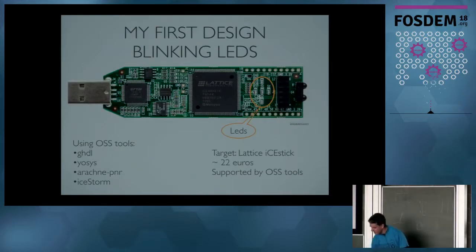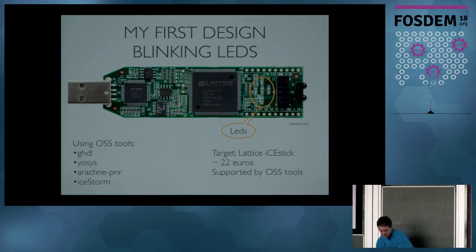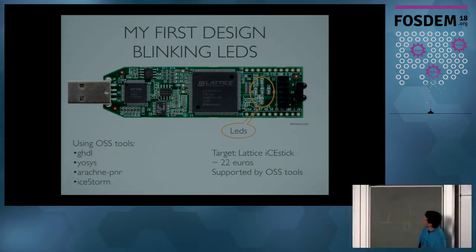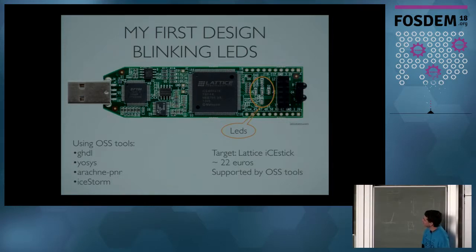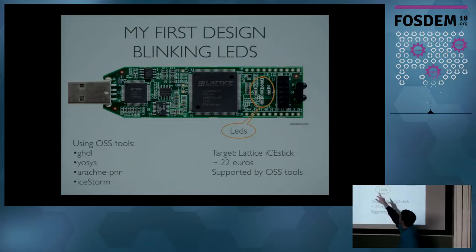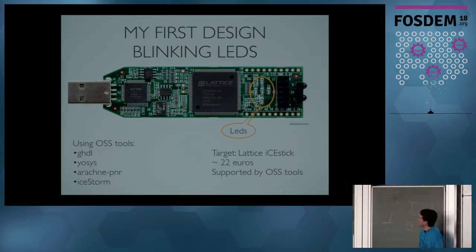So we will use this little board, which contains a programmable circuit. It's from Lattice, and it's an iStick board, 22 euros — not very expensive. And we will use some open source and free tools: GHDL for the VHDL front-end, which is used to create the netlist. Arachni-PNR to create the bitstream — the file that should be sent to program this FPGA. And IceStorm, which is a tool to actually write the bitstream onto the chip.